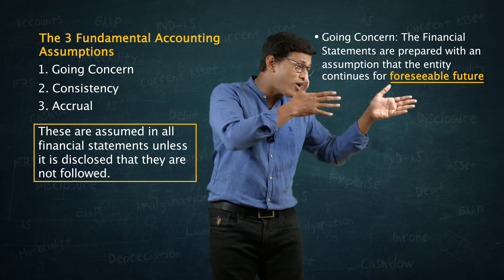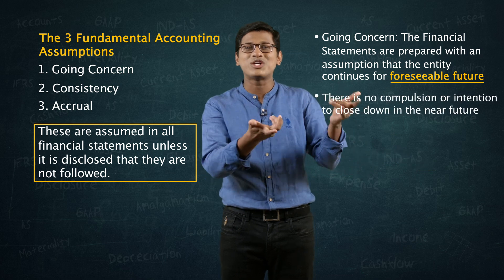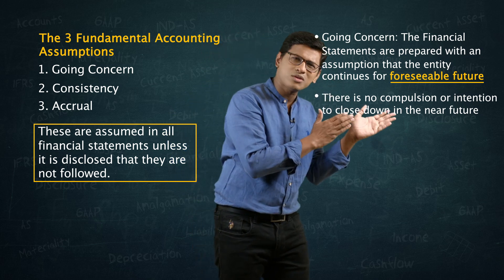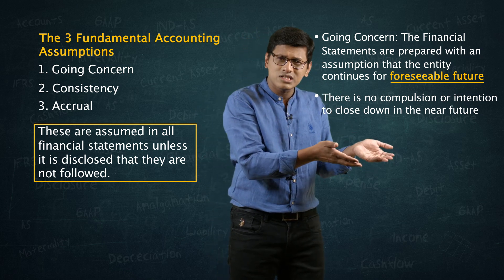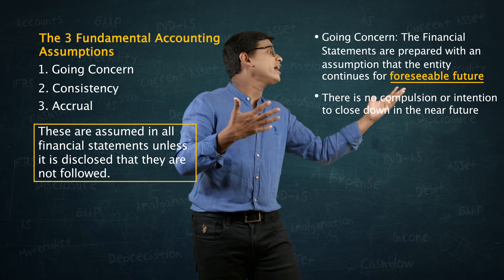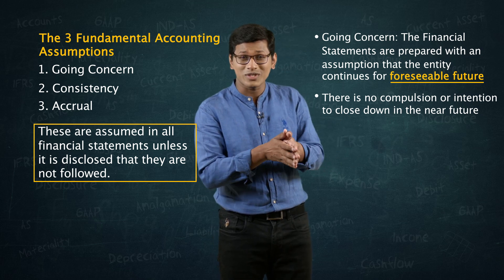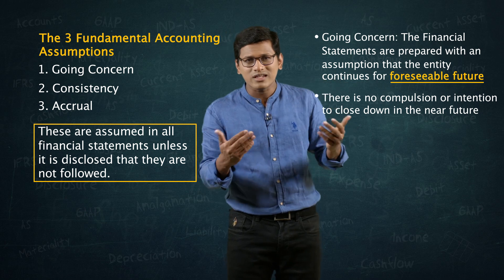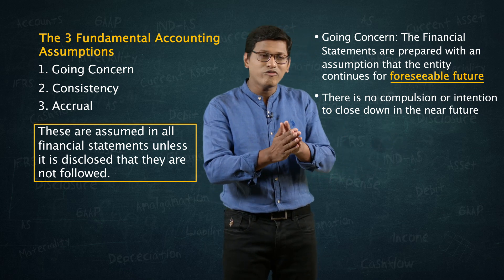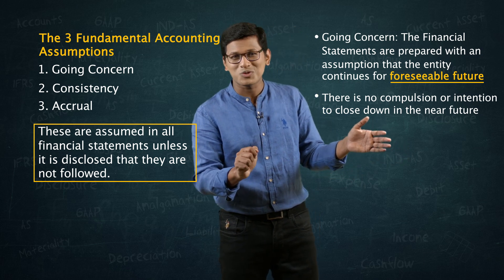What is the meaning of foreseeable future? You are standing here looking at the future — as far as you can see, is there any compulsion or intention on the part of the company to close down? The company's management visualizes: do we have any compulsion to close down the business? No. Do we have a voluntary intention to close down the business? No. When I say future, how far? As far as you can see. Objects closer to you are more visible than those far away — similarly, the accounting standard says when we talk about foreseeable future, ideally as far as you can see, but the next 12 months you should be able to see more carefully.